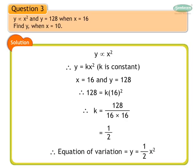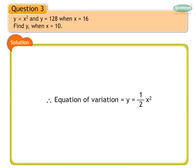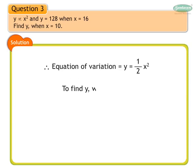Substituting the value of k in the equation y is equal to k into x square, the equation of variation is y is equal to 1 upon 2 times x square. Now, to find y when x is equal to 10: y is equal to one half into 10 into 10. We get y as 50.